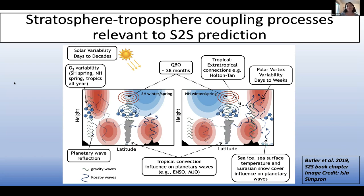This schematic shows the general circulation and features relevant to S2S prediction — plots of height versus latitude for the southern hemisphere winter on the left and northern hemisphere winter on the right. The red blobs are the zonal westerly jets. In the troposphere there's the year-round tropospheric jet, but in the stratosphere we only have a westerly jet during the winter hemisphere. In the summer hemisphere there are easterlies in the stratosphere, and this has important implications for how the stratosphere and troposphere communicate.